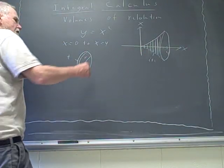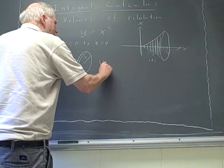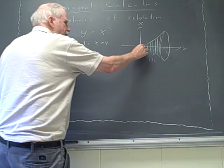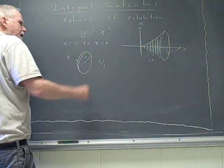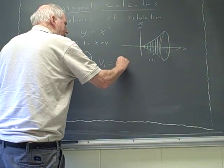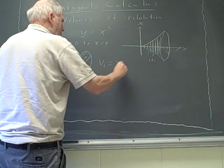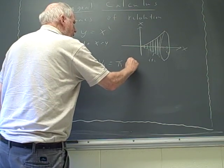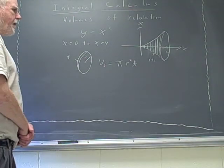So the volume, sub i, we'll call it, since it's the i-th one, here's the first one, second, et cetera, is going to be pi r squared t, okay?